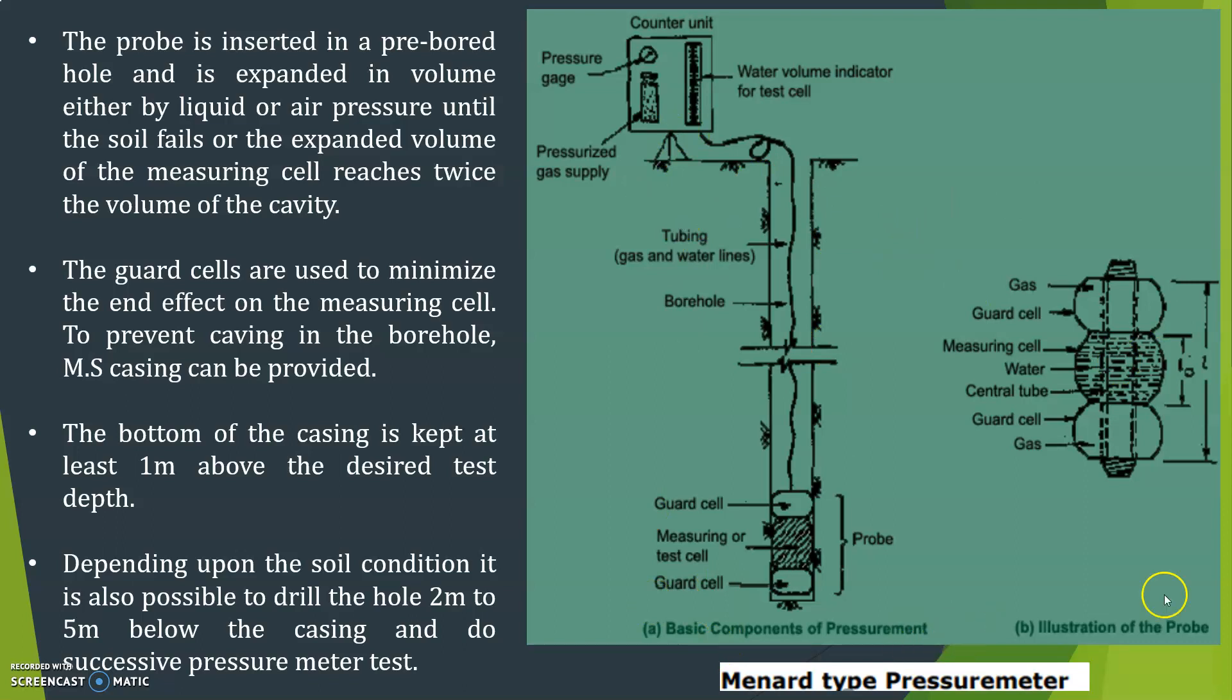This is the setup. There is a borehole, there is a probe and tubing, gas and water lines and here the pressurized gas supply. This is a pressure gauge control unit. Overall, the setup is control unit. Here there is a pressure gauge and pressurized gas supply and water volume indicator for the test. So it goes from here to like this to the soil through the casing. Casing can be provided.